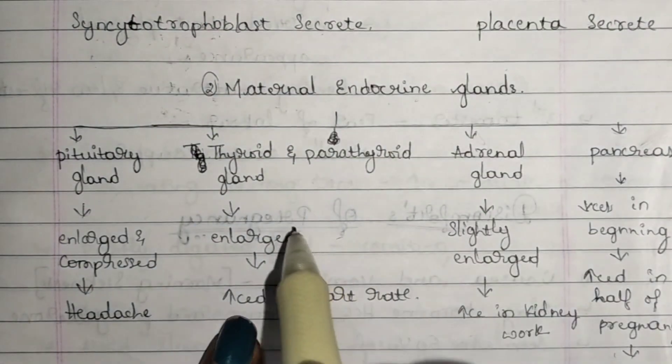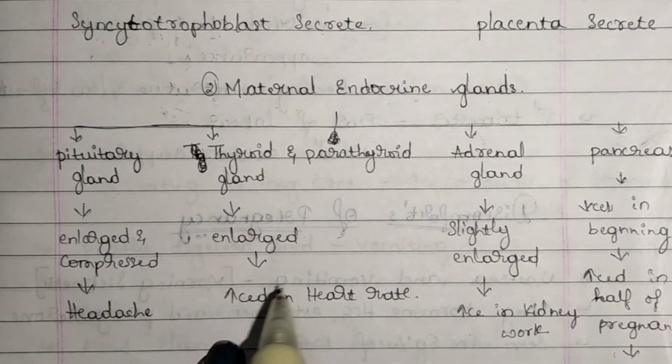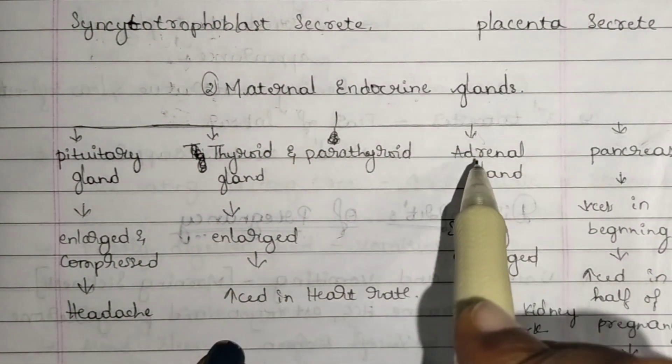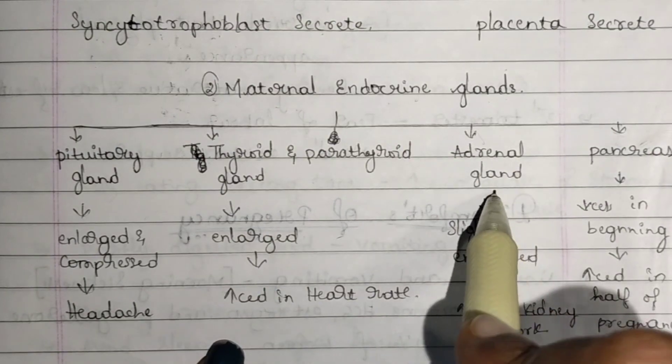Next, the thyroid gland and parathyroid gland. Both these glands will get slightly enlarged, and because of that there is a chance of getting thyroid issues for the mother. Because of this, there is also an increase in heart rate.